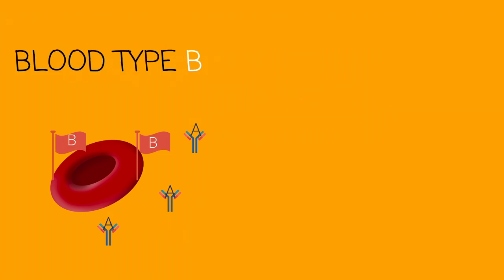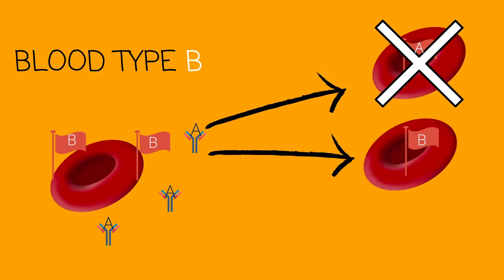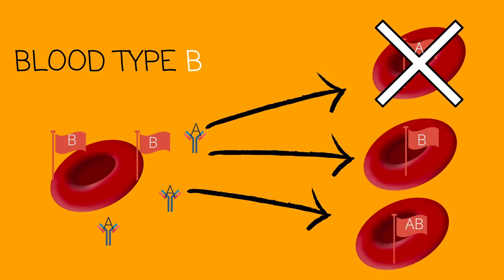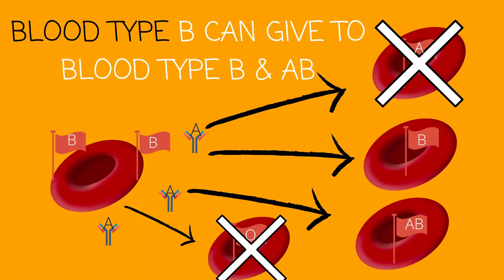Here we're working with blood type B. Blood type B will only be able to give blood to others with the B antigen. So can it give to A? No, it can't. Can it give to B? Yes, it can. Can it give to AB? Yes, it can. Can it give to O? No, it can't. So blood type B can only give to B and AB.